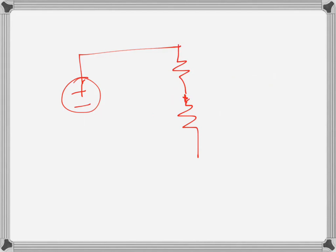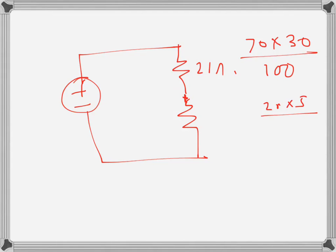70 and 30 is 70 times 30 over 70 plus 30, that's 2100 over 100, which is 21 ohms. And 20 and 5 in parallel is 20 times 5 over 20 plus 5, which is 25, so 100 over 25 is 4 ohms.